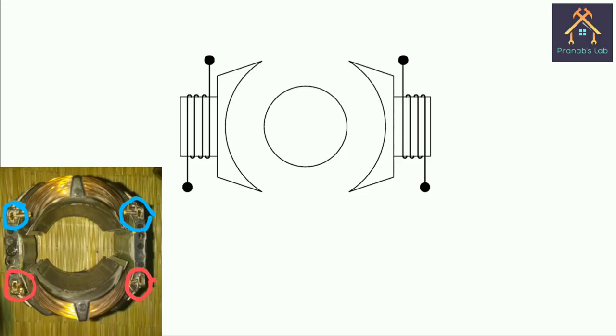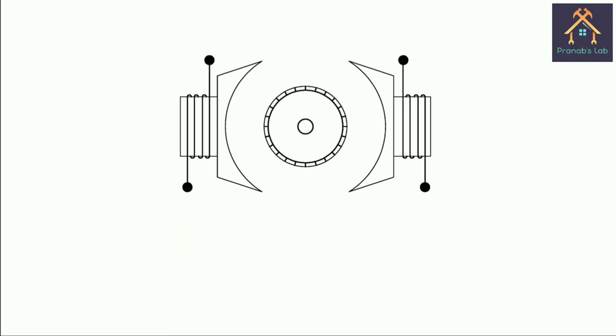You can see these black dots are the four terminals of the field. The armature is placed between the field poles. Two brushes are positioned on commutator like this and the connections look like this.